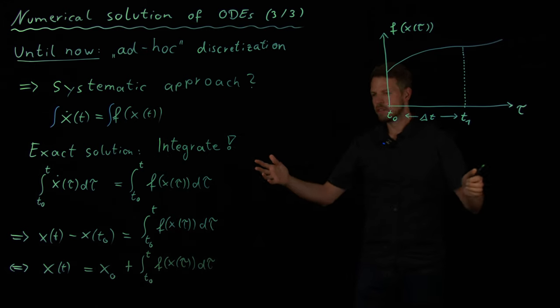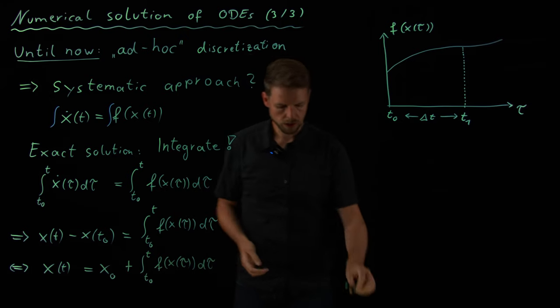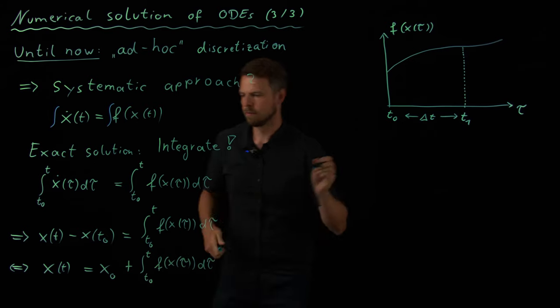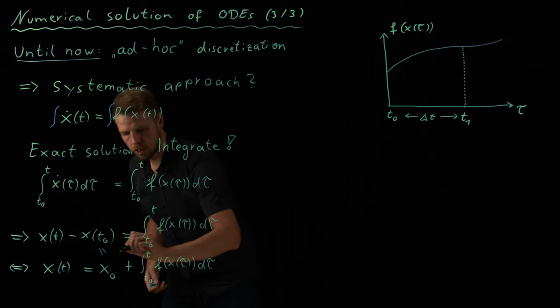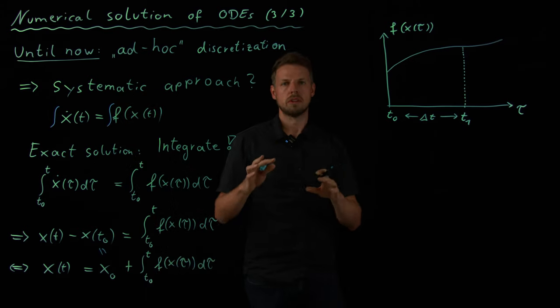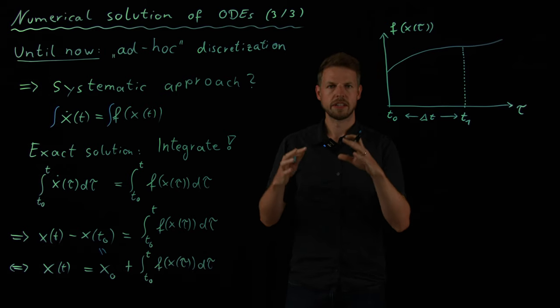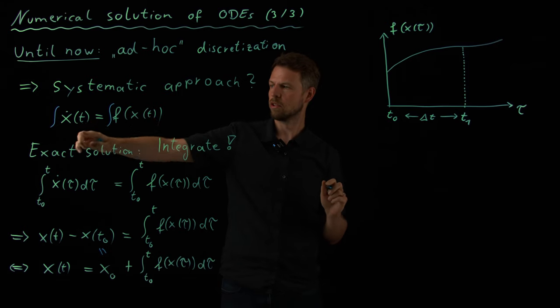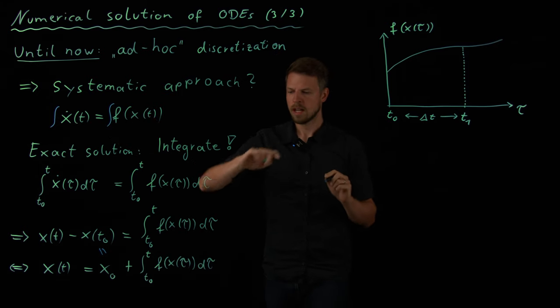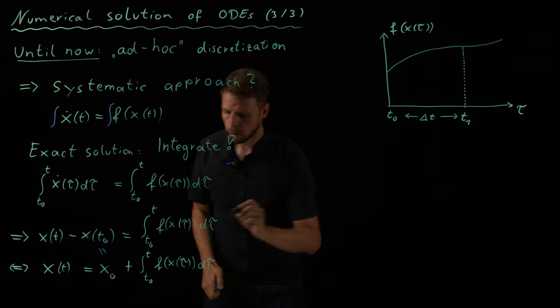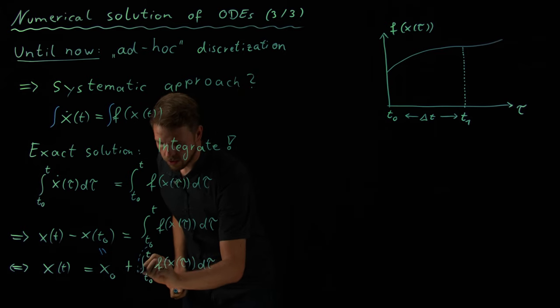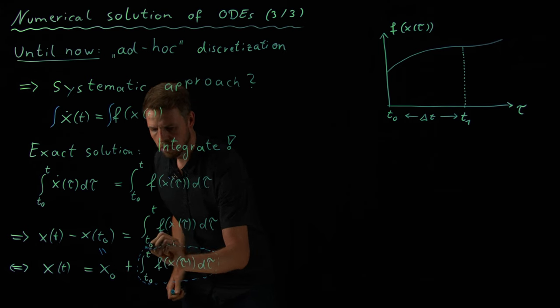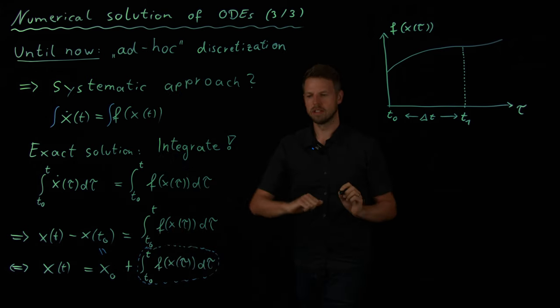And there you have it. I have a solution. I cannot necessarily compute it analytically, but still I have one. So, this is the initial condition. And now, the question of deriving a numerical scheme is again the question of discretization. Before we asked ourselves, can we use finite differences for this one? Now, we are asking ourselves, how do we discretize this term here? Can we find a numerical rule to find a solution for this in a computer?